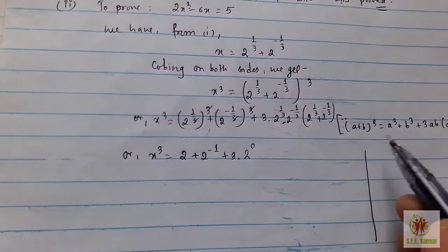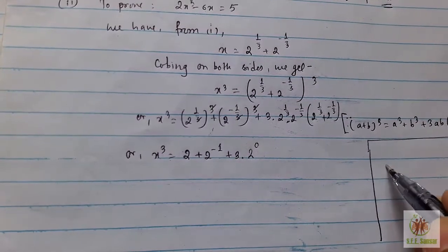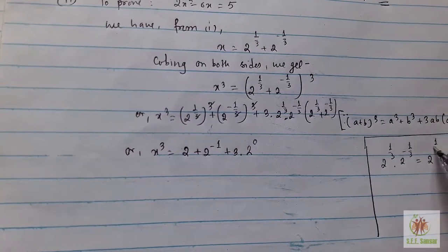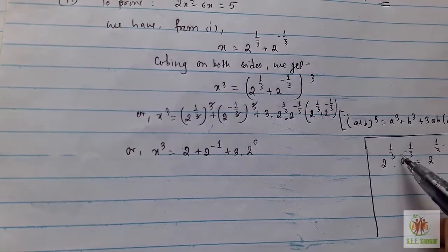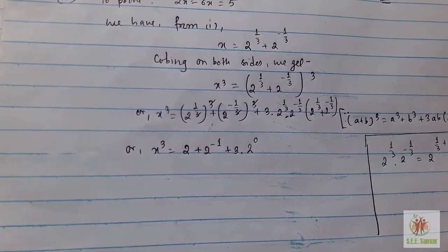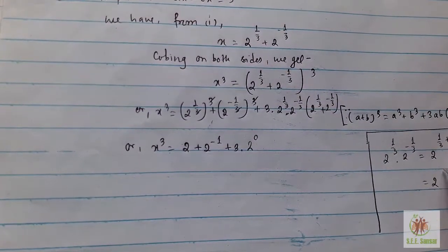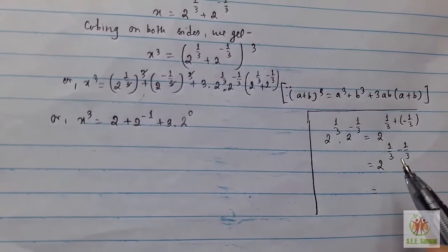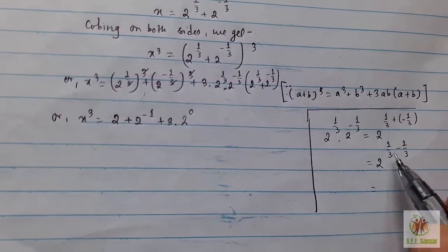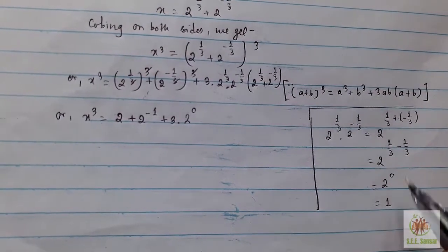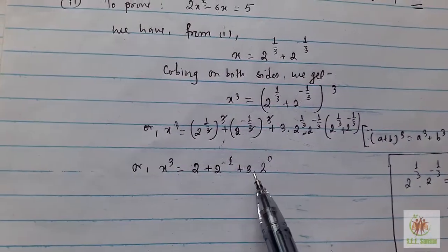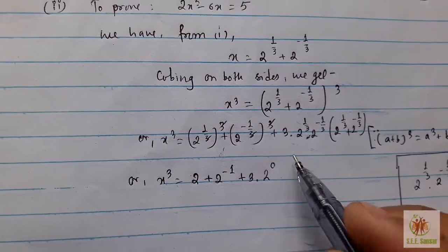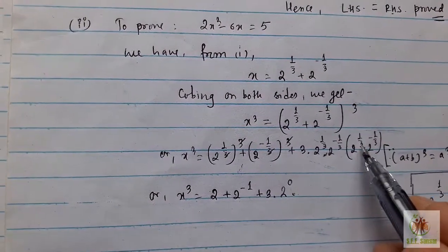Since 2^(1/3) × 2^(-1/3) = 2^(1/3 - 1/3) = 2^0 = 1, the middle term 3ab = 3 × 1 = 3. So we have x³ = 2 + 2^(-1) + 3 × (a + b) = 2 + 2^(-1) + 3x.